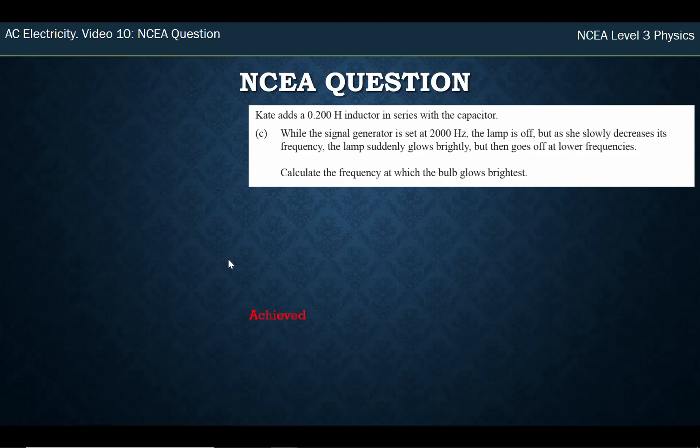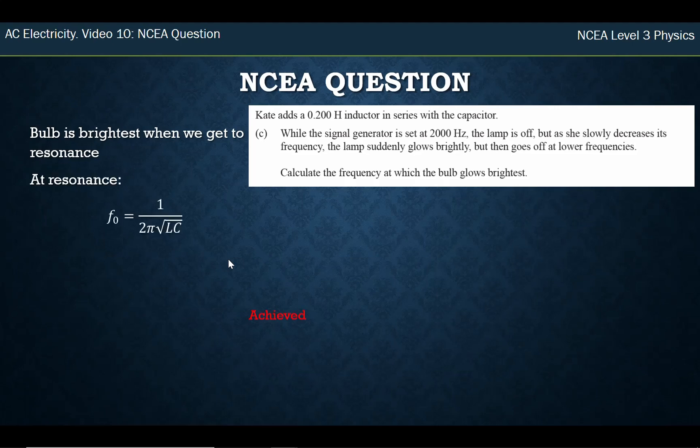This next one is an achieve question. Kate adds a 0.2 Henry inductor. The signal generator is set at 2,000 Hz. The lamp is off, and as she slowly decreases the frequency, the lamp suddenly glows brightly, then goes off at a lower frequency. Calculate the frequency at which the bulb glows brightest — this is resonance. The bulb is brightest at the resonant frequency. There's a formula on the formula sheet; putting in 0.2 H and 1.2 × 10⁻⁶ F, I get 325 Hz.